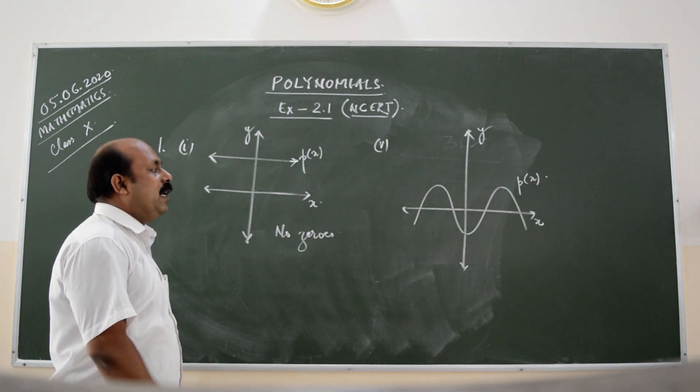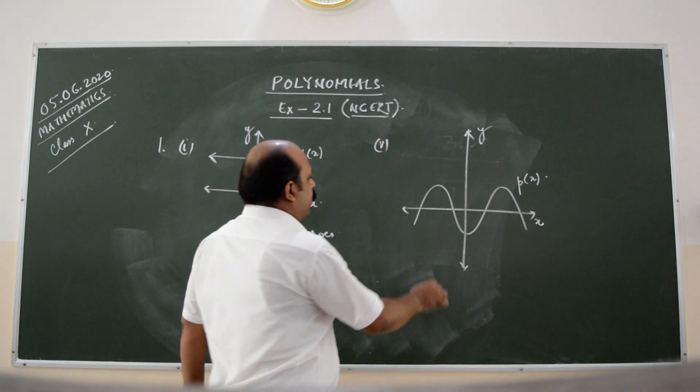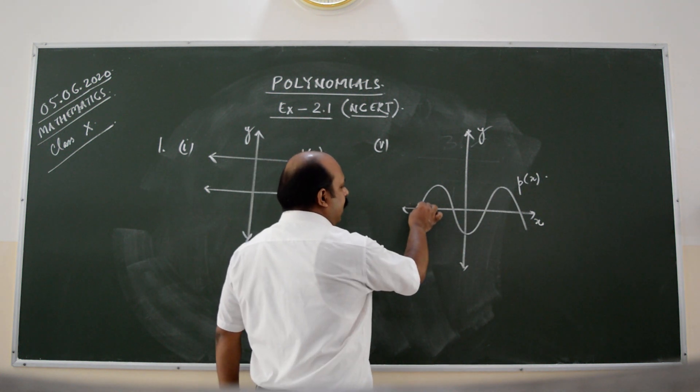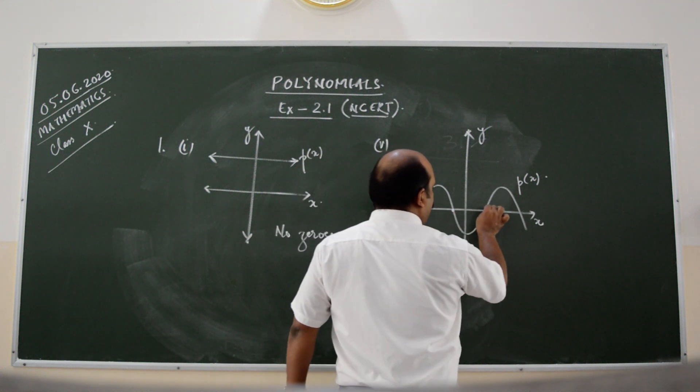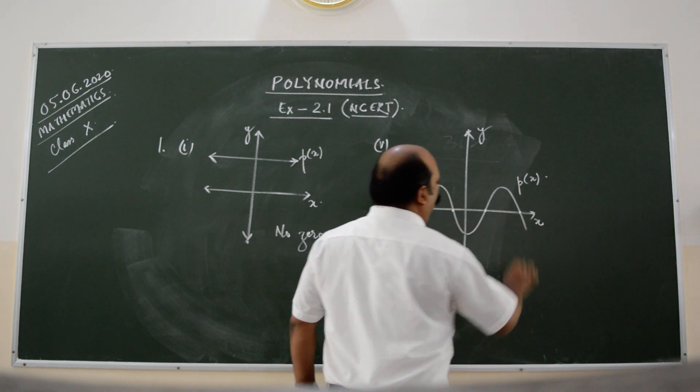Now, you have to say how many zeros are there on this graph. You can see the graph of p of x is intercepting the x axis at one, two, three and four different points.